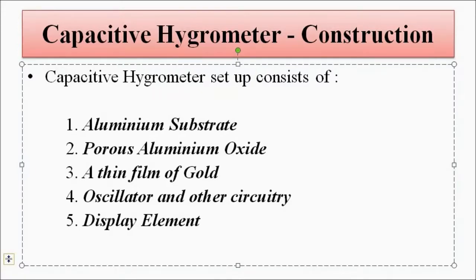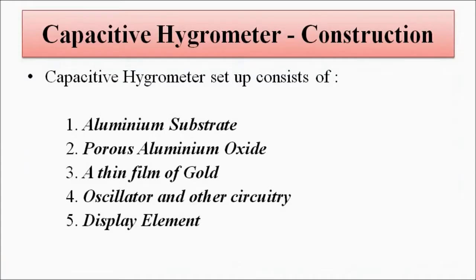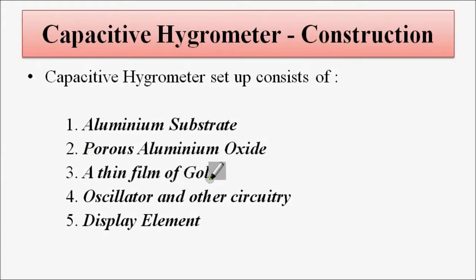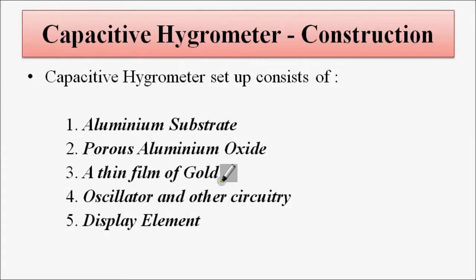The capacitive hygrometer setup consists of an aluminum substrate, porous aluminum oxide, and a thin film of gold. For signal conditioning we can use an oscillator circuit or any other AC bridges, because we have to convert the capacitance change into an output — either in terms of frequency change with the help of an oscillator, or voltage or current with the help of suitable AC bridges — and a display element.